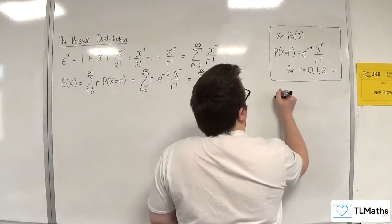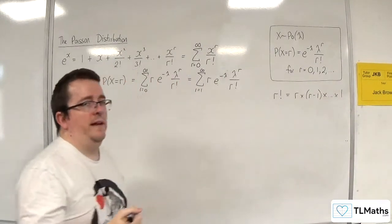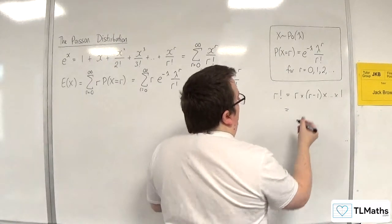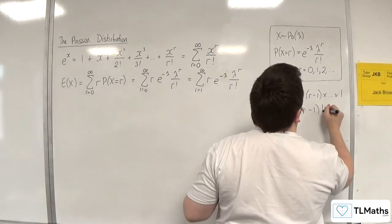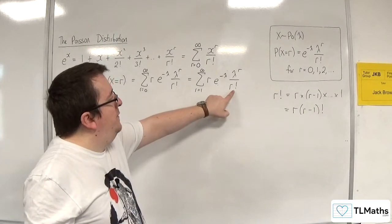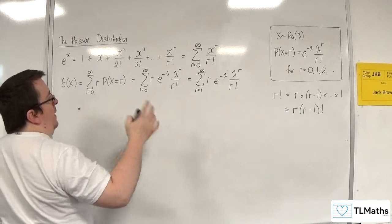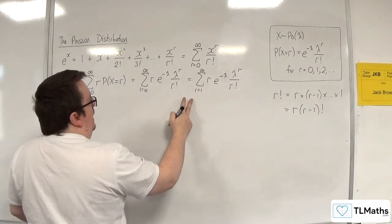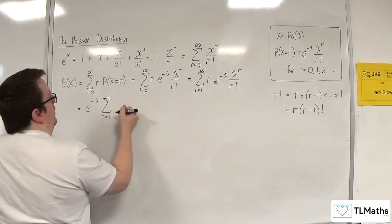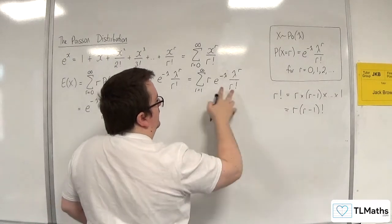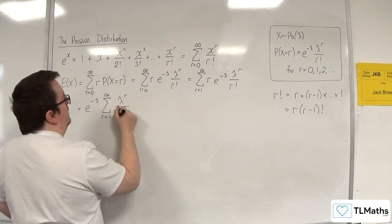We know that r factorial is r times r minus 1 times r minus 2 all the way down to 1. So r factorial is the same as r times r minus 1 factorial. Here we've got r times r minus 1 factorial in the denominator and we've got r in the numerator, so the r's cancel. I'm also going to bring e to the minus lambda out of the summation — it has nothing to do with r, so that's perfectly fine. So I've got r equals 1 to infinity of lambda to the r over r minus 1 factorial.